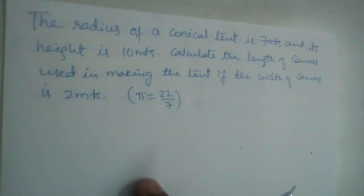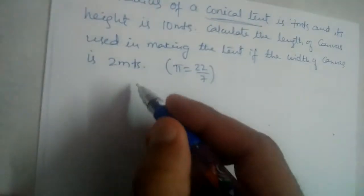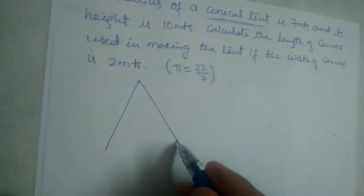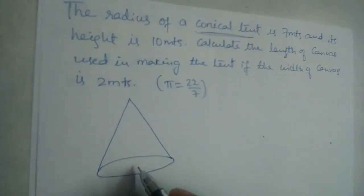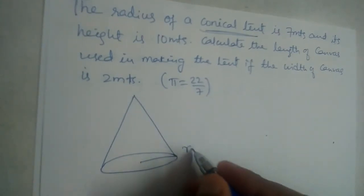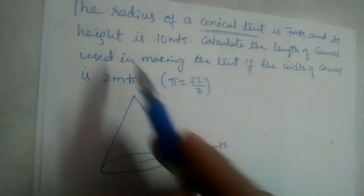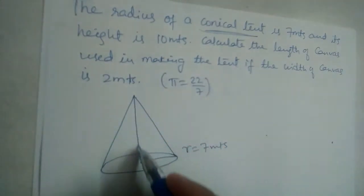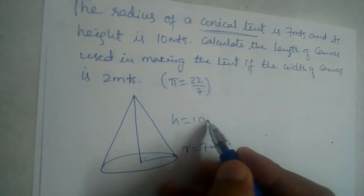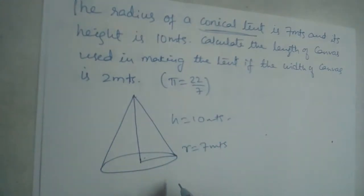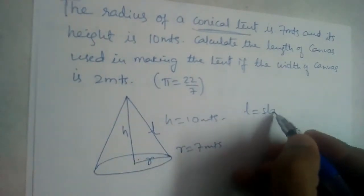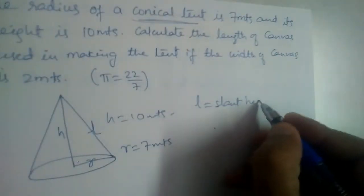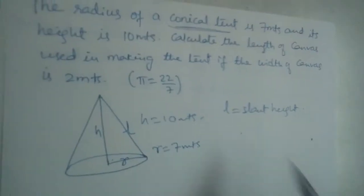We have a conical tent — a cone. Let us first draw a cone. The radius of this cone is equal to 7 meters, and the height of this cone is 10 meters. We label H for height, R for radius, and L for slant height.